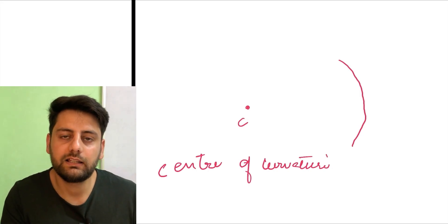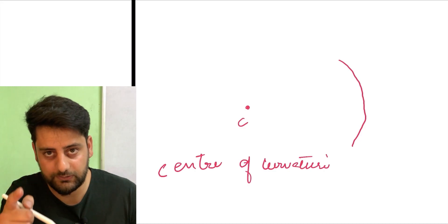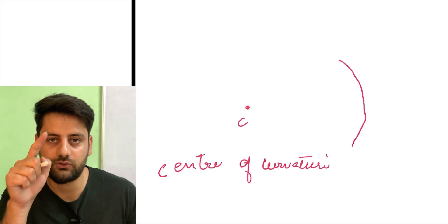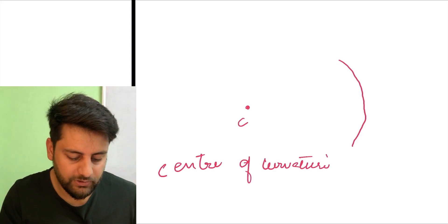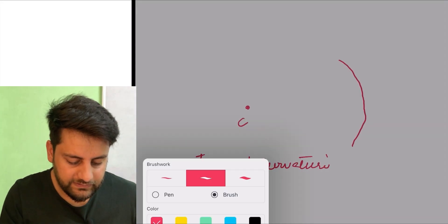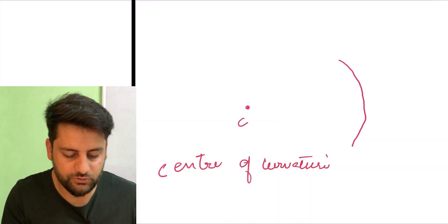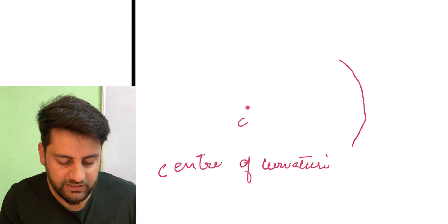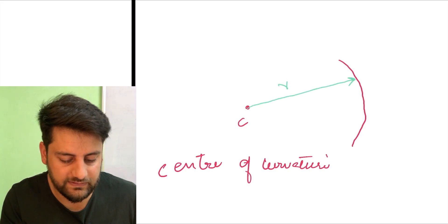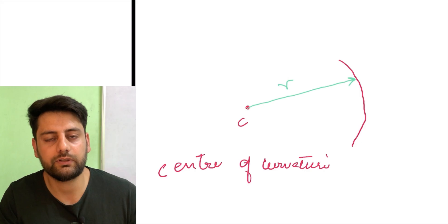It is basically the center of the curvature. Is part ko jisko hamne cut kiya hai, joh yeh curvature hai, is ka joh center hai, yeh basically wahi center hai, joh sphere ka center tha. Next is, is sphere se, is center se, joh distance thi sphere tak, we called it radius of sphere. Wahi hamara banega radius of curvature. This distance is called radius of curvature.